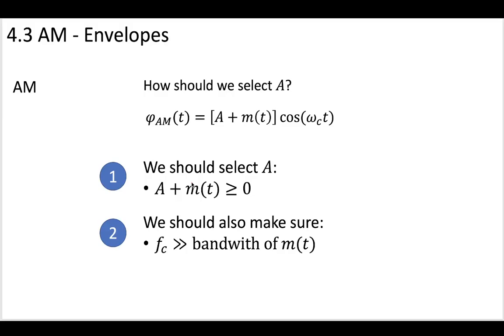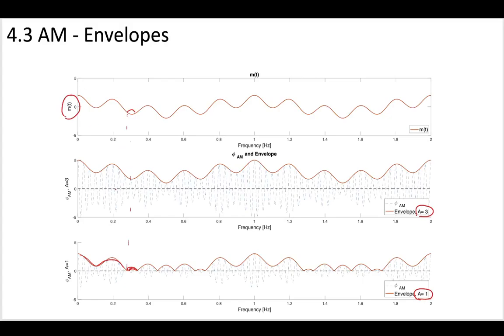Okay, now the other criteria that we should have is that we should make sure that the bandwidth of this is much larger than m(t). So in these previous slides, I had the frequency fairly low, just so that you can see what the modulation looks like, you can see pretty clearly how it's oscillating back and forth.